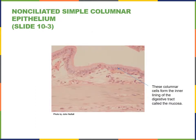Here's an example of a simple columnar epithelium found lining the mucous membrane of the digestive tract in the intestines. This is a non-ciliated simple columnar epithelium — there are no cilia on the apical surface, but there are small projections called microvilli that increase the surface area. The function of this epithelium is secretion of mucus and absorption of nutrients, with the tall columnar shaped cells providing more protection and an increased amount of cytoplasm with proteins important for secretion and absorption.